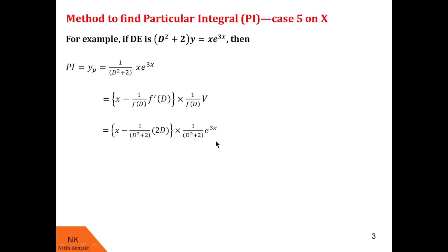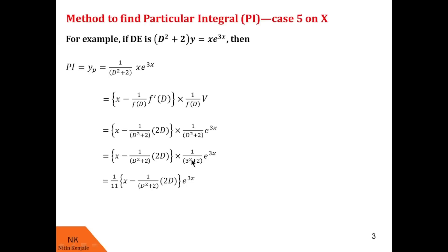Now let us first evaluate the inner part. We see that the RHS is of the type e^(ax), so the value of 1/f(D) of e^(ax) can be obtained by replacing every D in the expression by a. So we replace D by 3, giving 1/(3² + 2) times e^(3x), which is 1/11 times e^(3x). This constant 1/11 can be taken out, so we are left with 1/11 times [x minus 1/(D² + 2) times 2D] of e^(3x).